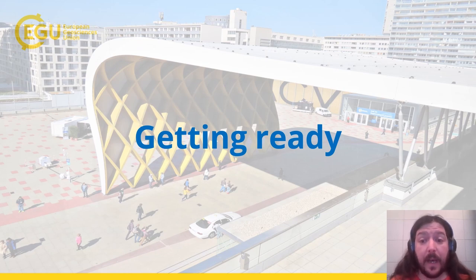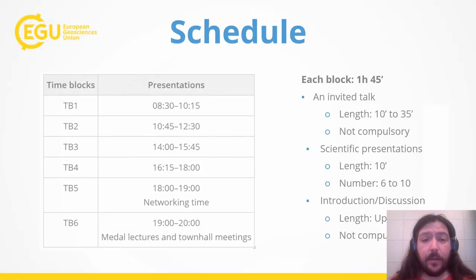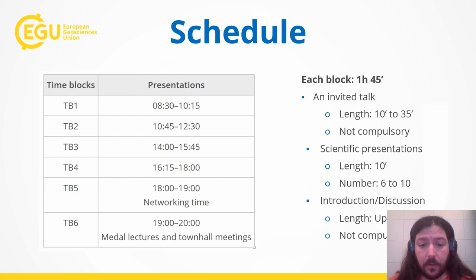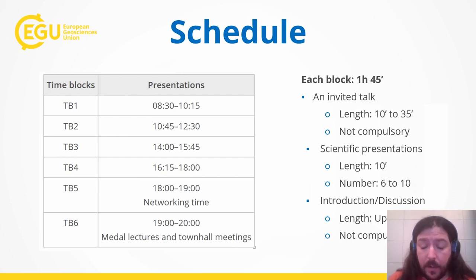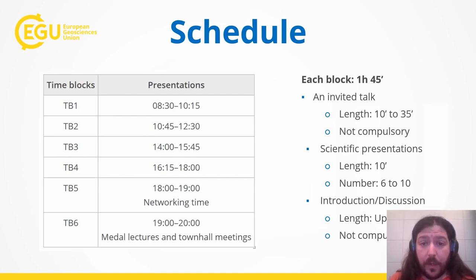I will now provide brief guidelines on how to organize and lead your session. For your session, you should be aware that on any given day there will be four time blocks for scientific sessions, each block being one hour and 45 minutes. In each block, you could schedule an invited talk that can vary in length between 10 and 35 minutes, a variable number of presentations between 6 and 10, and an introduction or discussion slot of up to 10 minutes. You cannot schedule presentations for more than the time block assigned to your session.